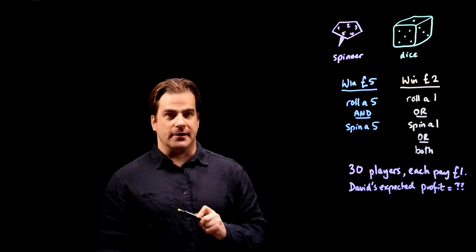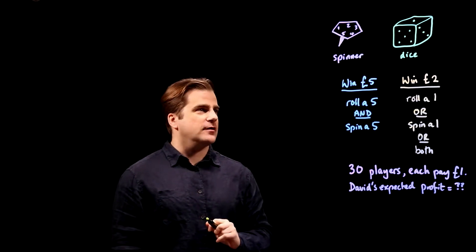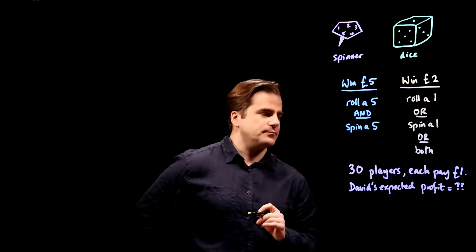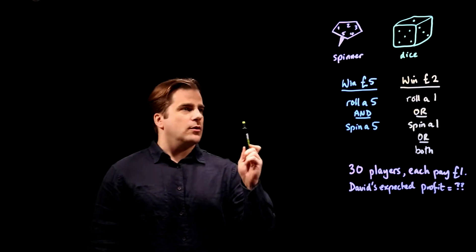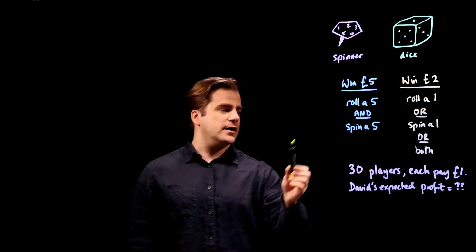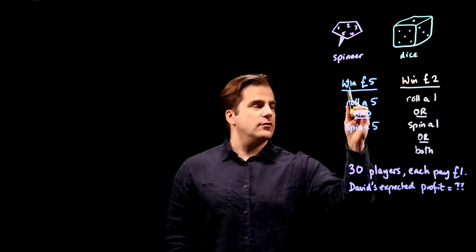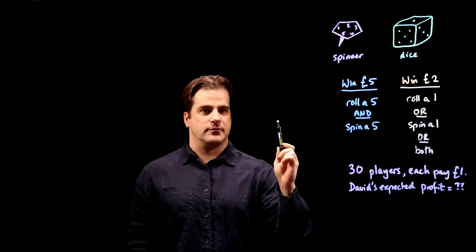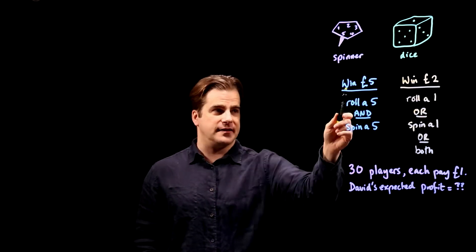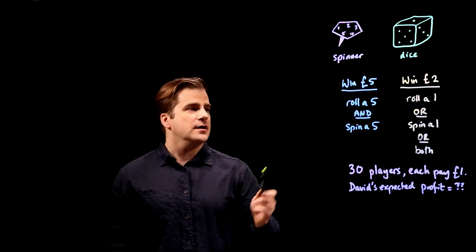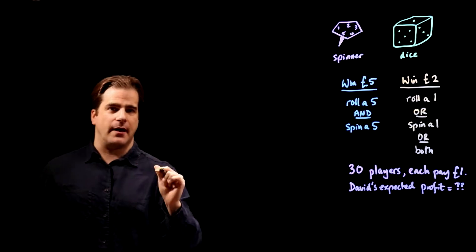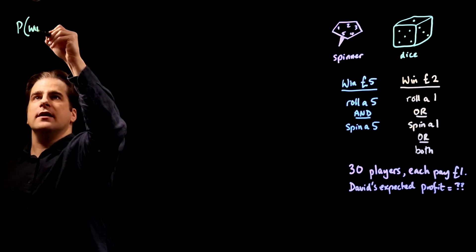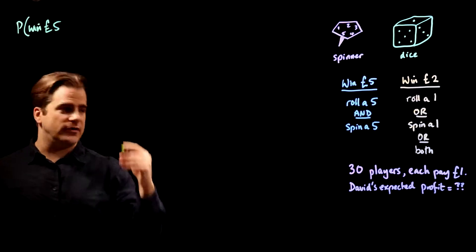Is he going to make any money? Well, it turns out his expected profit is positive — he should make a little bit, but let's see. So how do we do this? Let's start by working out the probability of winning five pounds. We'll focus on the spinner because that's easier. So: probability of winning five pounds with one go — every player gets one go.